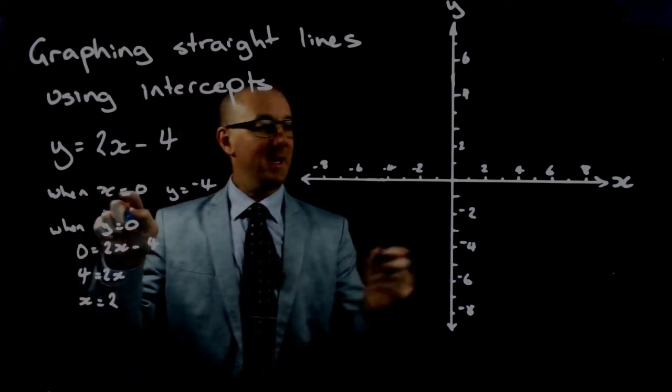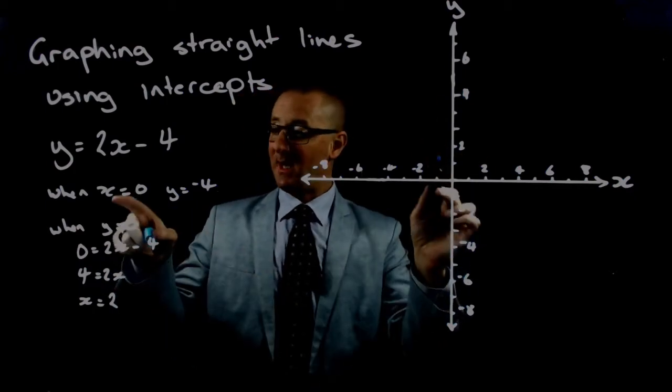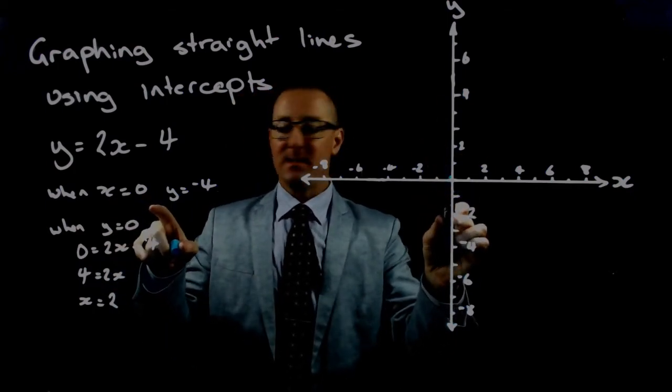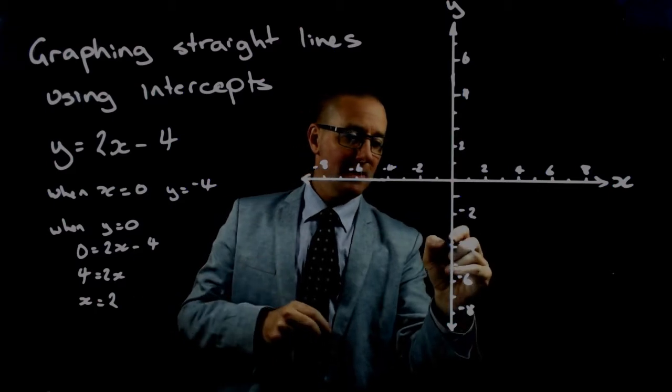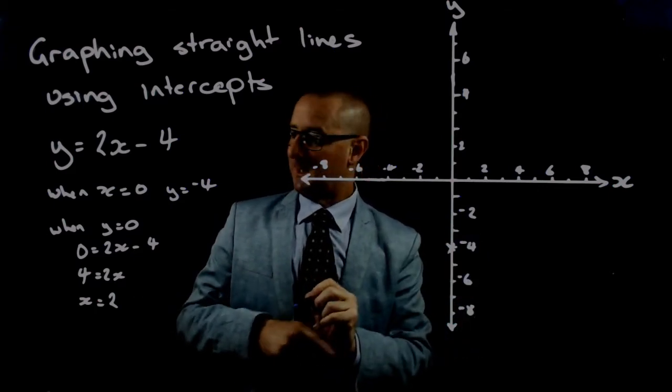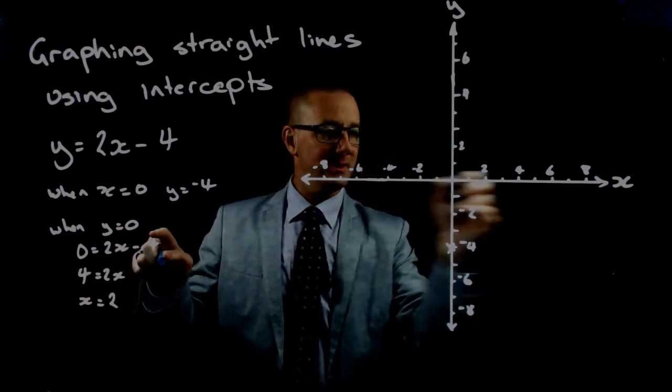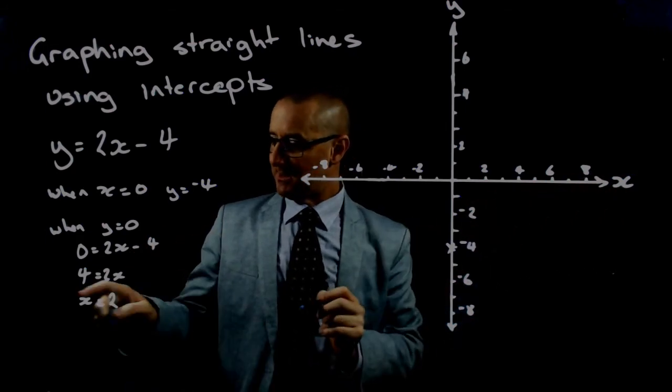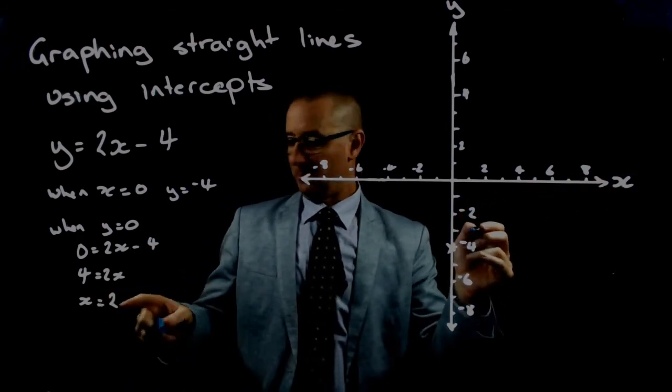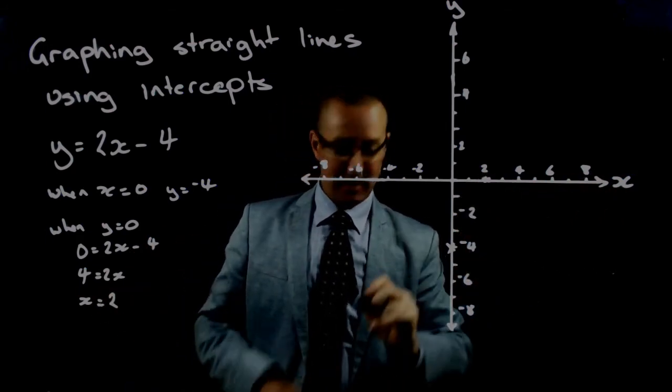So when x equals 0, that's our y-intercept, y is minus 4, this point here. When y equals 0, we're finding our x-intercept, x equals 2. And there's our x-intercept.